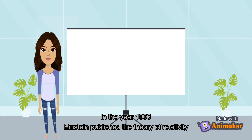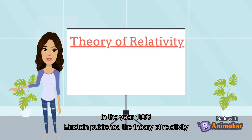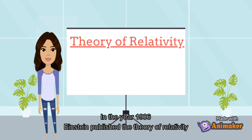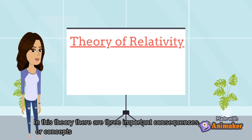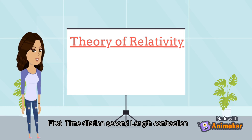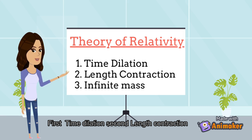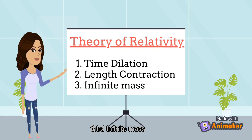In the year 1906, Einstein published a theory of relativity. In this theory, there are three important consequences or concepts. First, time dilation. Second, length contraction. Third, infinite mass.